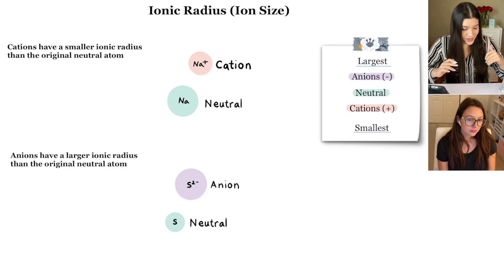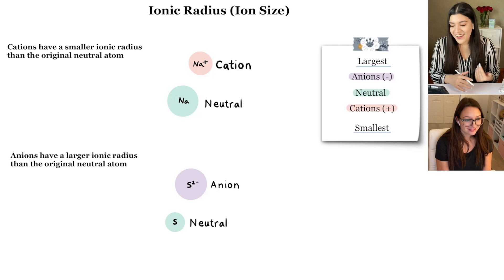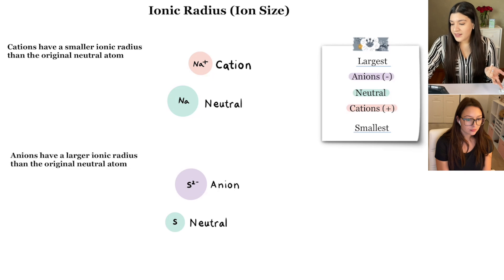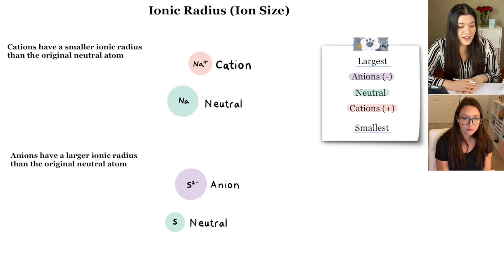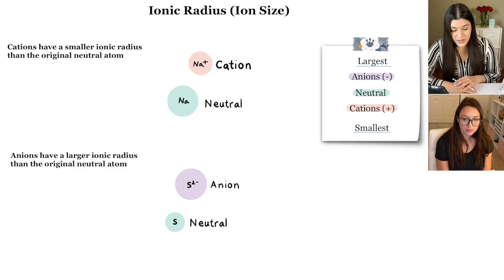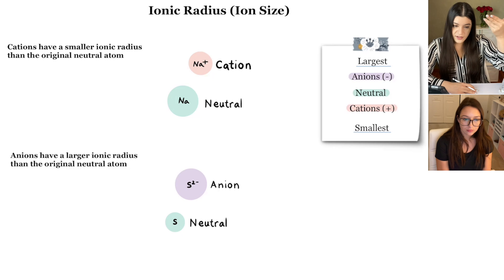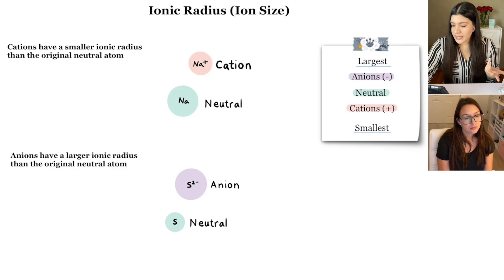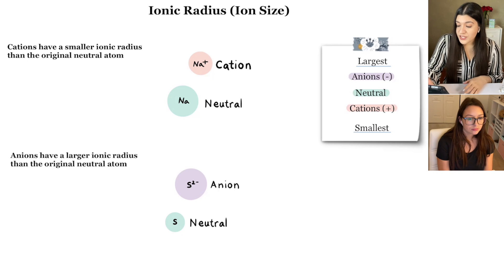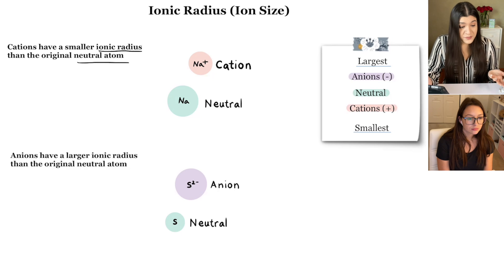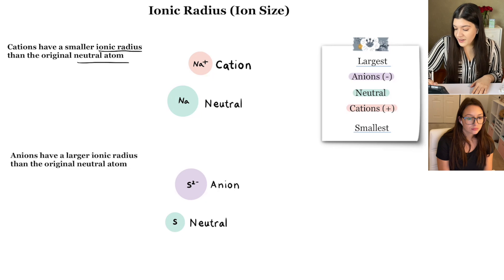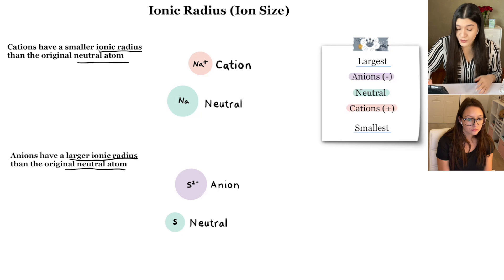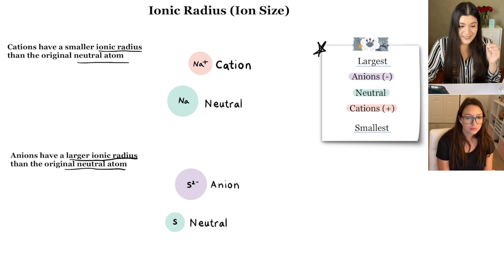There's an important ordering rule for ionic radius — think of it as a post-it note to remember. The largest are anions, next is the neutral atom, and cations are the smallest. Cations always have a smaller ionic radius than the original neutral atom, and anions always have a larger ionic radius than the original neutral atom. This order is going to save you.